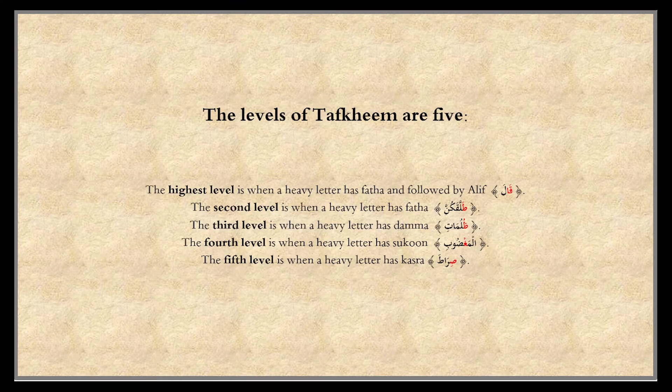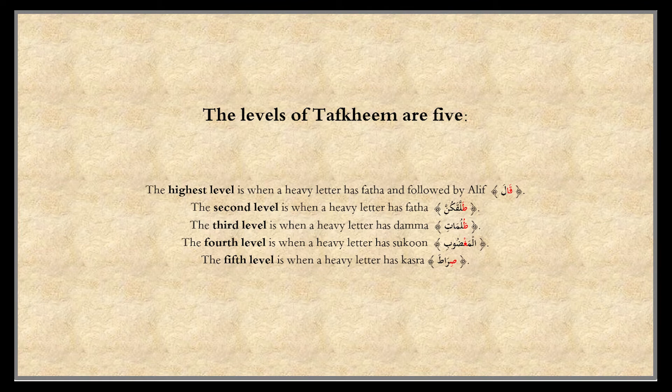The levels of Tafkhim — levels of heaviness — are five. The first, which is the highest level, is when a heavy letter has a Fatha and is followed by Alif, like Qala. So Qaf is one of the heavy letters and it is followed by Alif — this is the highest level. The second level is when a heavy letter has Fatha, like Talaqa.